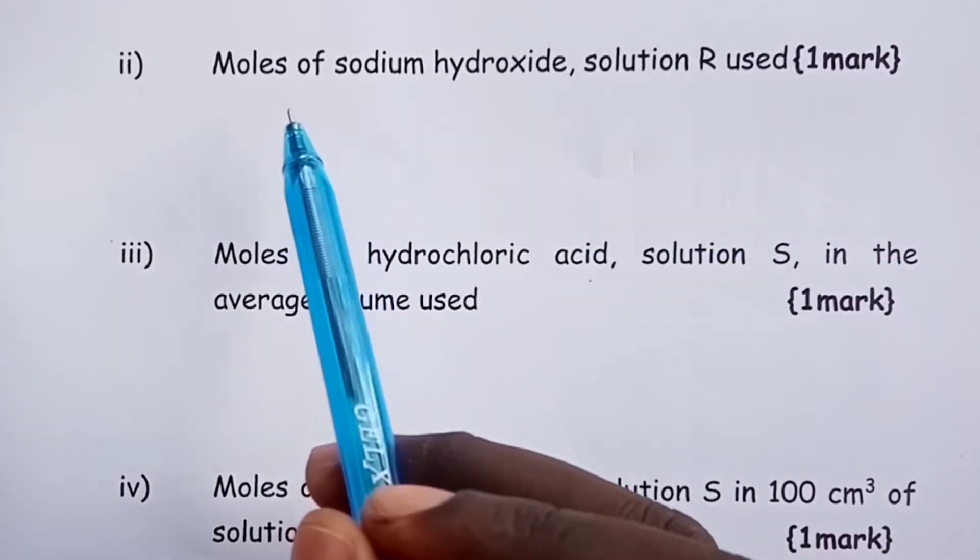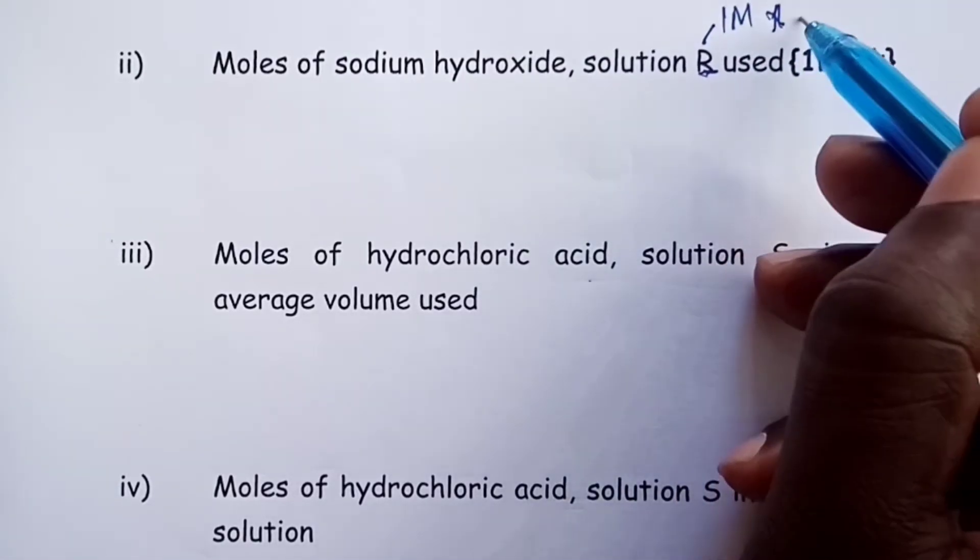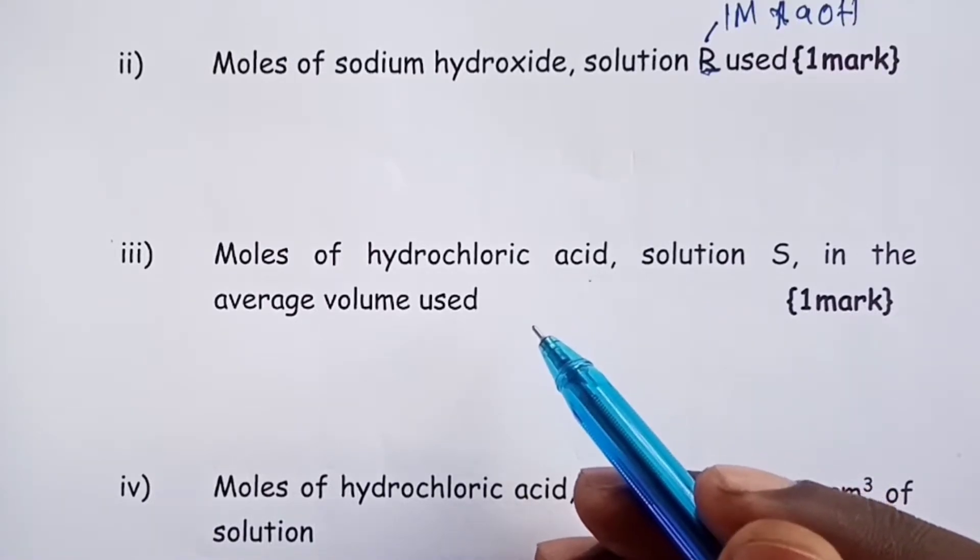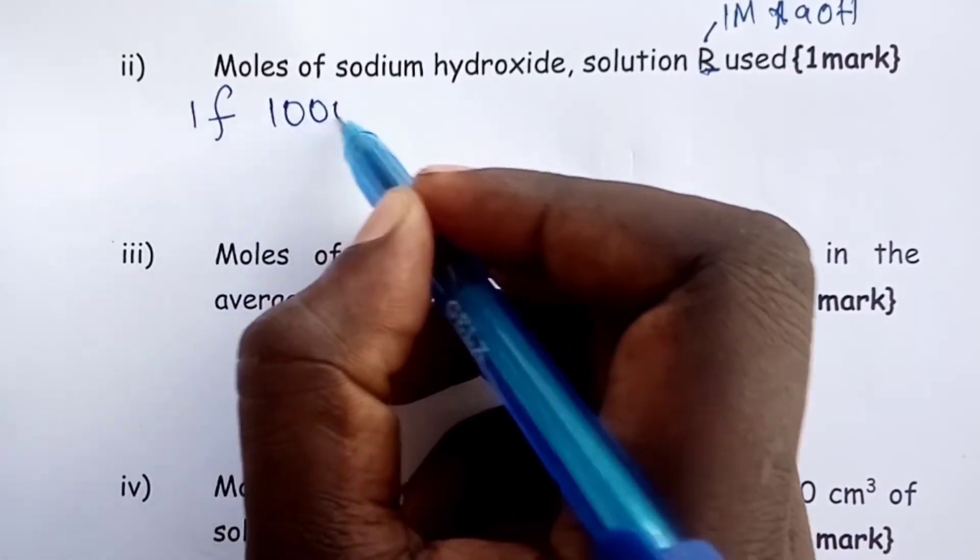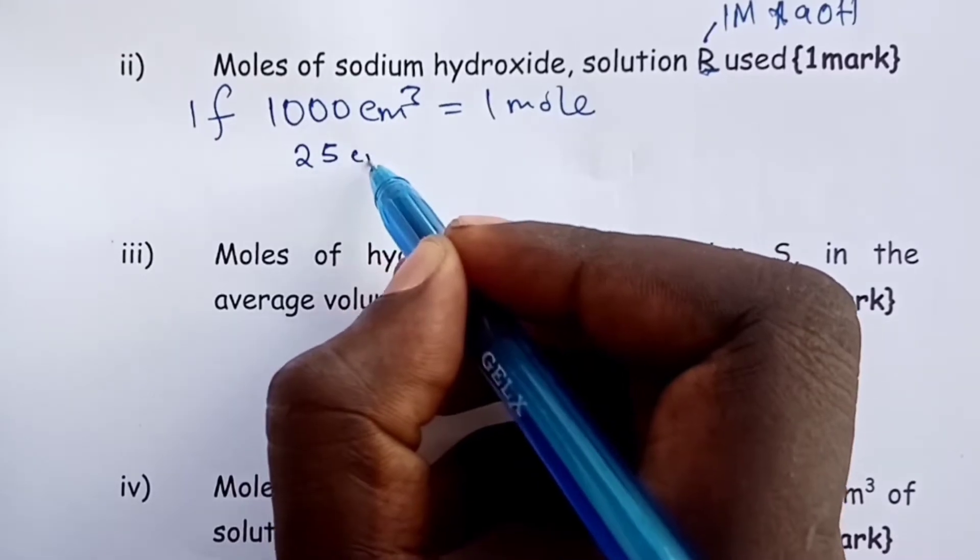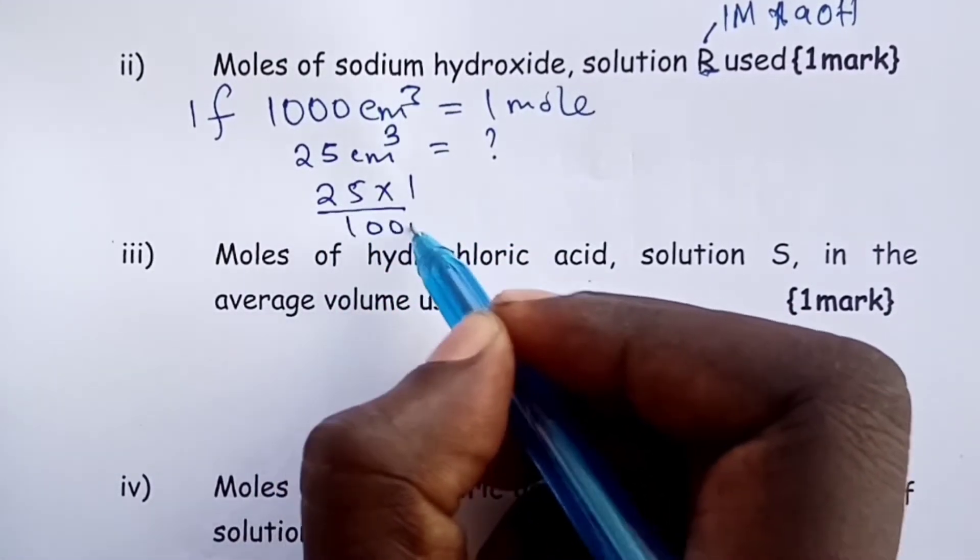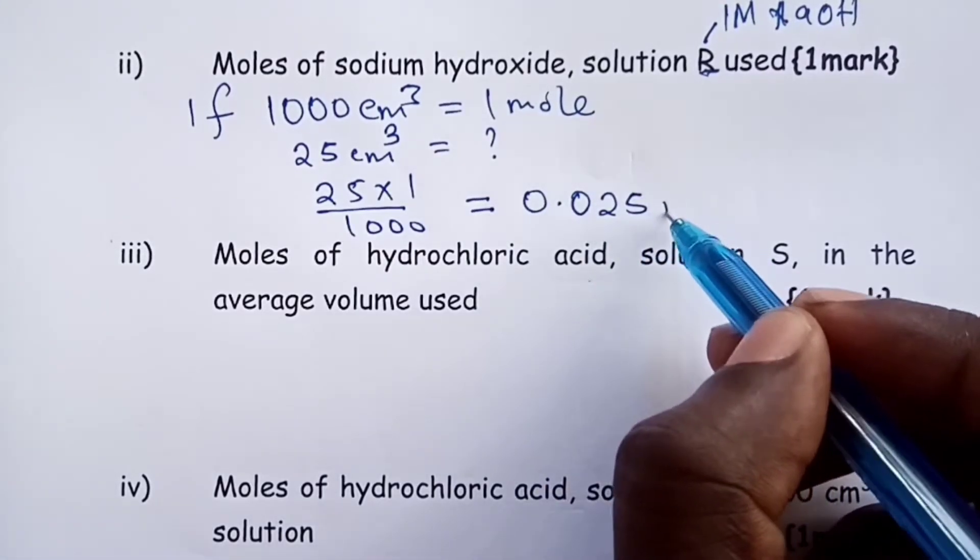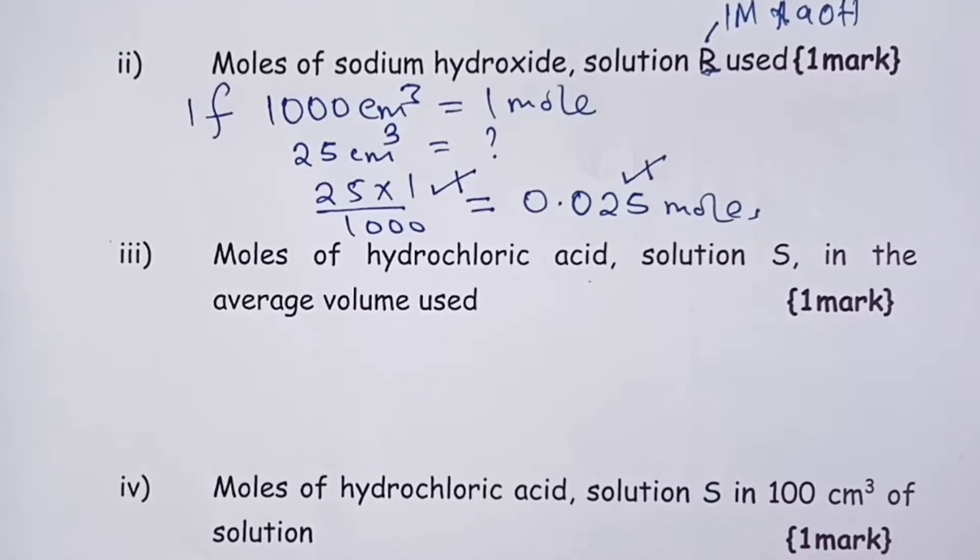Let's proceed to the rest of the questions now. Question 2, we are asked to calculate moles of solution R used. Remember, solution R is 1 molar sodium hydroxide solution. If you could see our procedure, we pipetted only 25 of the same. So to get the answer here, we shall argue out that 1 liter of our solution contains 1 mole of sodium hydroxide. How many moles then are we supposed to have if we picked only 25 of the same? So, cross multiplication gives me 25 times 1 divided by 1000. And I get my answer as 0.025 moles. This is one mark, so a half for the working, a half for the final answer.